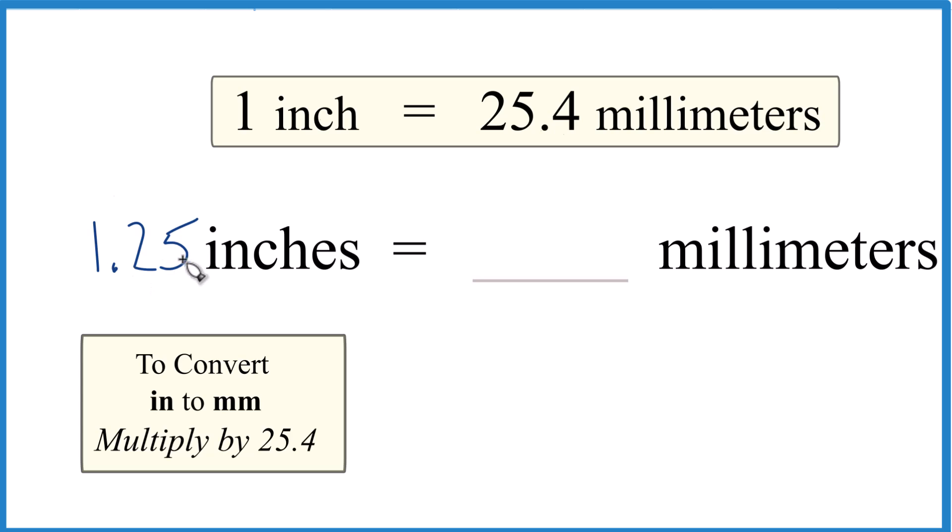We have our 1.25 inches. If one inch is 25.4, we would just take 1.25 and multiply that times our 25.4. Going inches to millimeters, we just multiply by 25.4 like this.